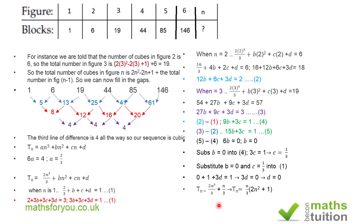Let's verify: for n = 1, (1/3)(2×1 + 1) = (1/3)(3) = 1. Correct. For n = 2, (2/3)(2×4 + 1) = (2/3)(9) = 6. Correct. For n = 3, (3/3)(2×9 + 1) = 1×19 = 19. Correct. Now try n = 4, 5, and 6 yourself. I hope that made sense — thank you for watching. Please subscribe. Bye bye.